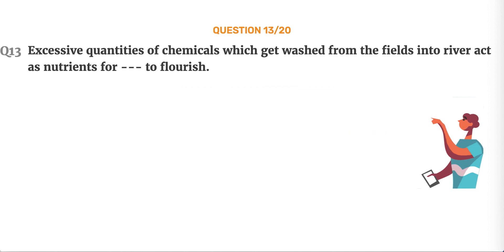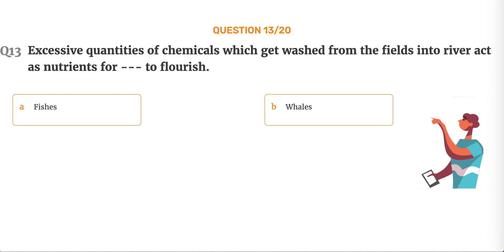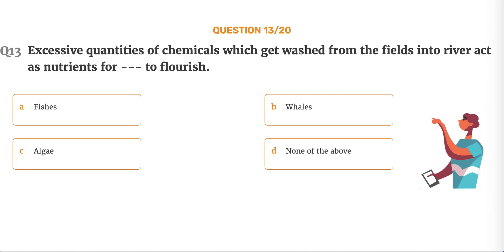Question number 13. Excessive quantities of chemicals which get washed from the fields into rivers act as nutrients for dash to flourish. Option A, Fishes. Option B, Whales. Option C, Algae. Option D, None of the above.